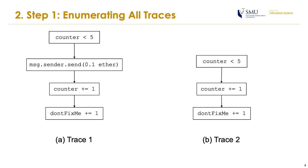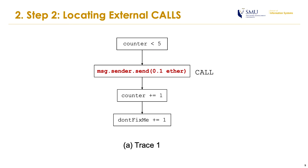Here we show the overall workflow to achieve that result. Step 1: we enumerate all possible traces. From the given example, the vulnerable smart contract has 2 traces. Trace 1 goes to the true branch of the if statement and trace 2 goes to the false branch. In Step 2, we find critical external calls. In our case, it is message.sender.send from trace 1, represented at the bytecode level by the instruction CALL.